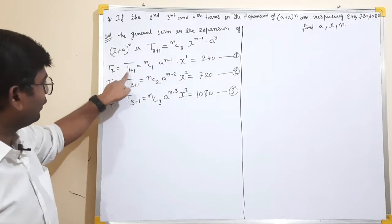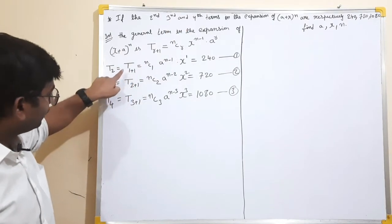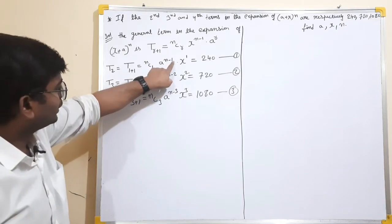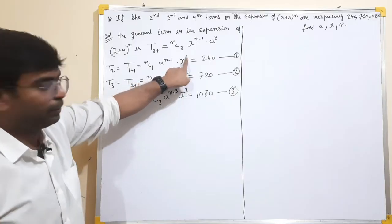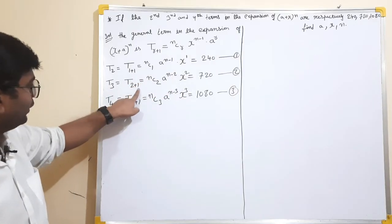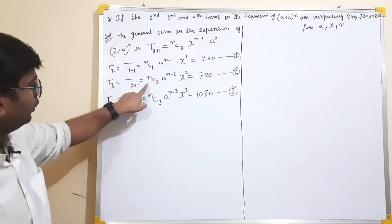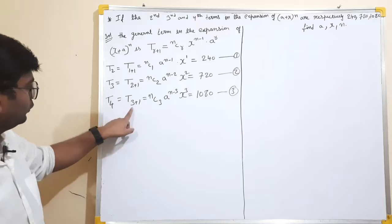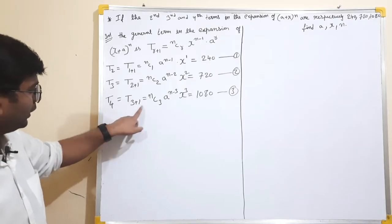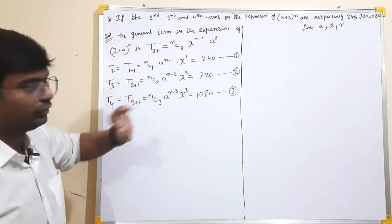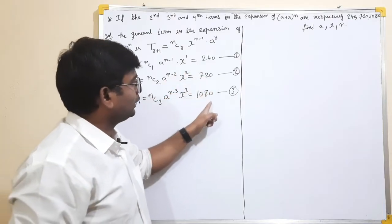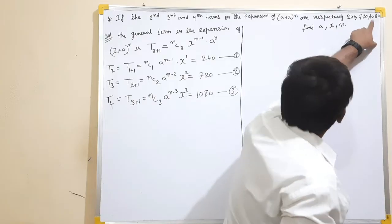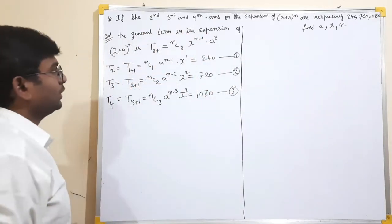So the second term is T2, third term is T3, fourth term is T4. Setting NC1 * A^(N-1) * X = 240, NC2 * A^(N-2) * X^2 = 720, and NC3 * A^(N-3) * X^3 = 1080. We will get the values from these three equations.